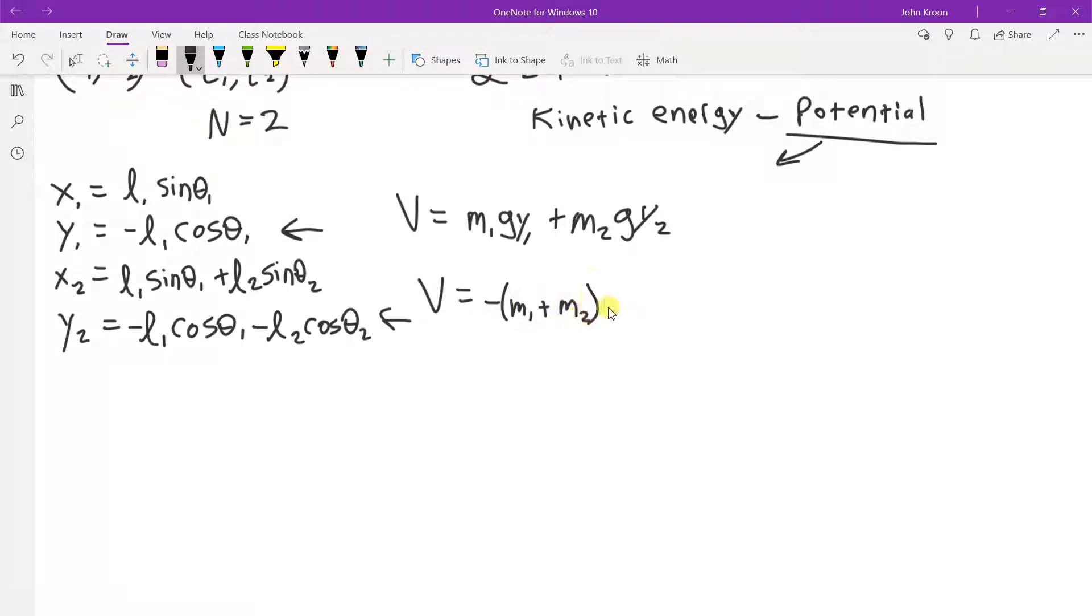You get minus m1 plus m2 gl1 cosine theta 1 minus m2 g l2 cosine theta 2. All right, so this is the first equation I'm going to put in a box because this is an intermediate result.